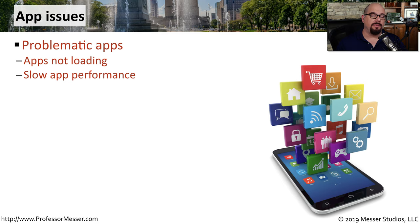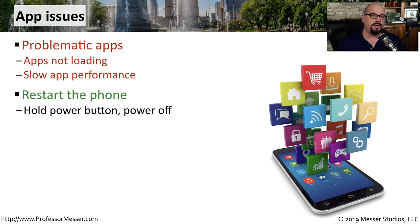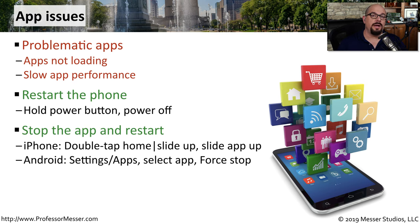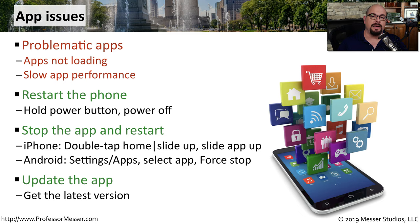Some apps having a problem on a mobile device may result in the application not loading at all, or it may be very slow once it finally loads. You can restart the phone by holding down the power button and powering off, or try stopping that individual app and restarting it. On iOS, double-tap the home button or slide up from the bottom, then slide the app off the screen. In Android, select Settings, Apps, select the individual app, and choose Force Stop. If this continues to happen, you can contact the developer of the application or try downloading the latest version of the app.